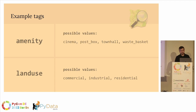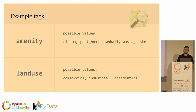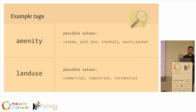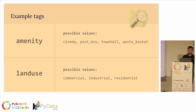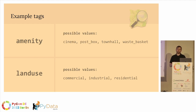Here are some example tags. The first is called amenity, which is really popular because it includes things typically useful to people or places people want to go — values like cinema, post box, town hall, and wastebaskets. The second is a tag called landuse, which might be more interesting to people doing environmental research, with values such as commercial, industrial, residential, farmland, and forest. You can do really interesting environmental analysis in OpenStreetMap with that tag alone.